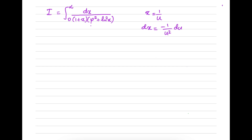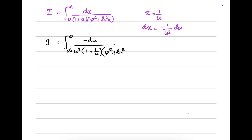Now we can plug in. We should change the limits: when x approaches 0, u approaches infinity; when x approaches infinity, u approaches 0. Then dx is minus du over u squared. So we have 1 plus 1 over u to the phi squared, and natural log squared of 1 over u in the denominator.